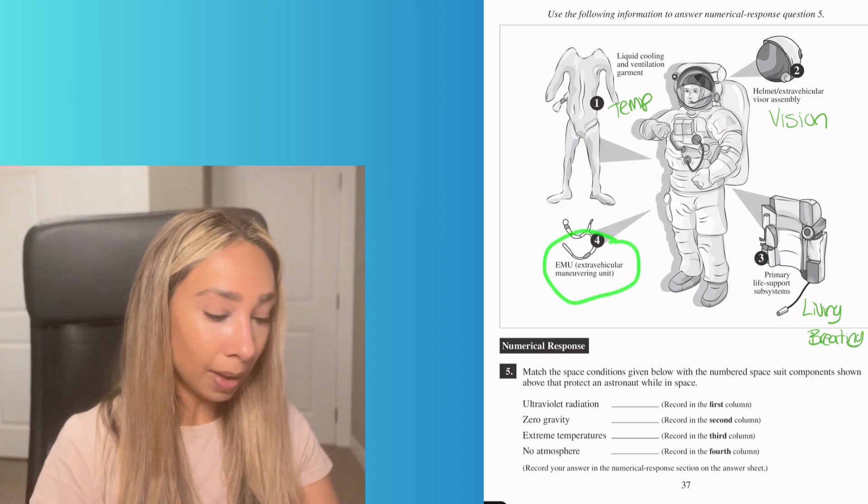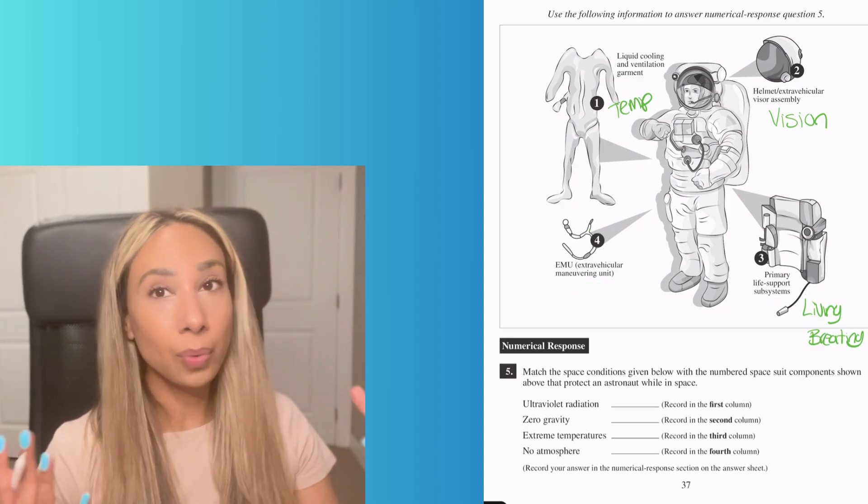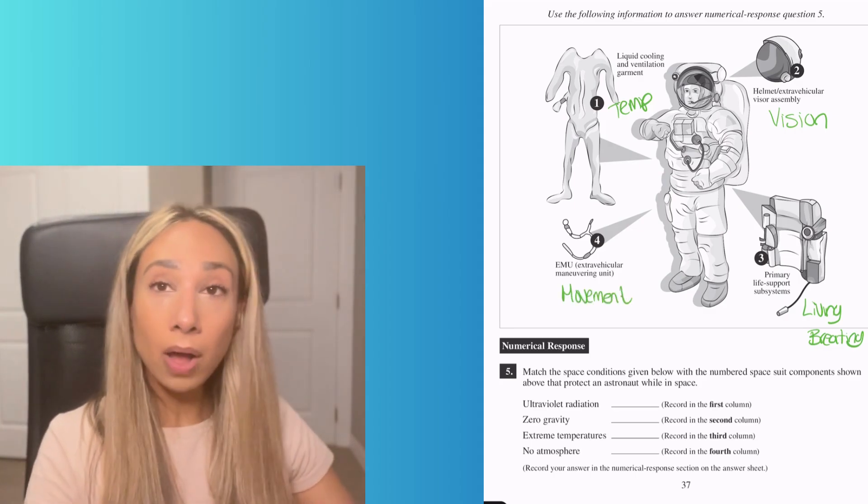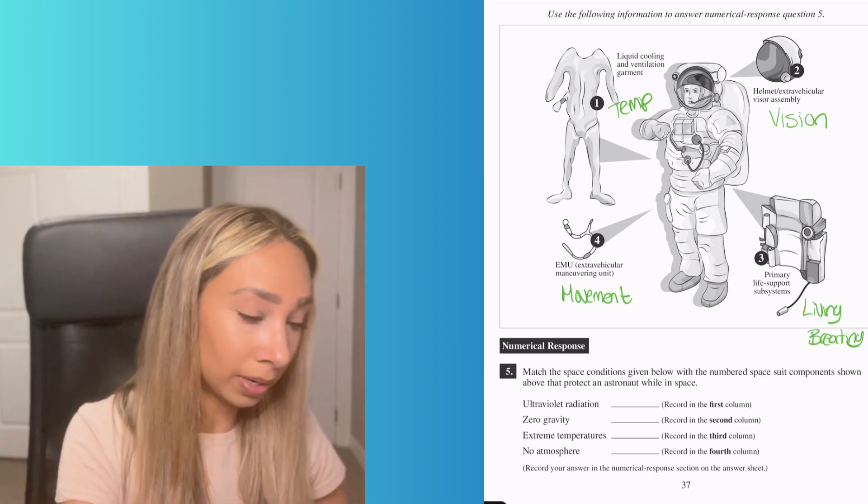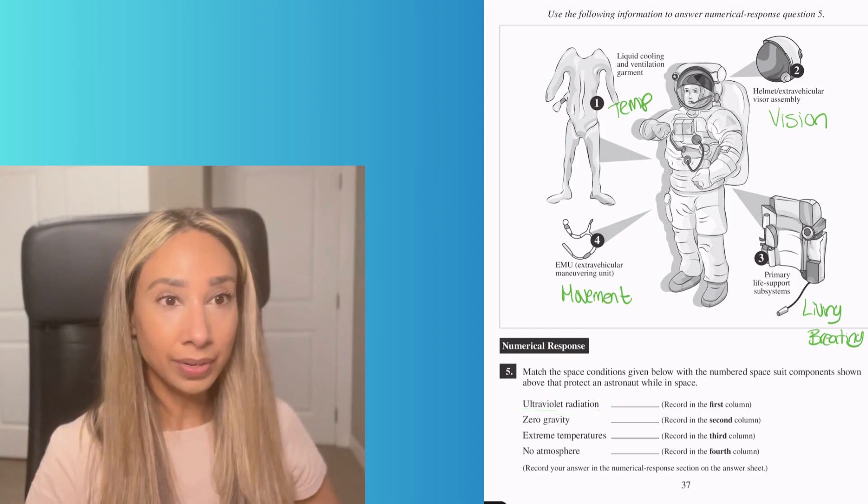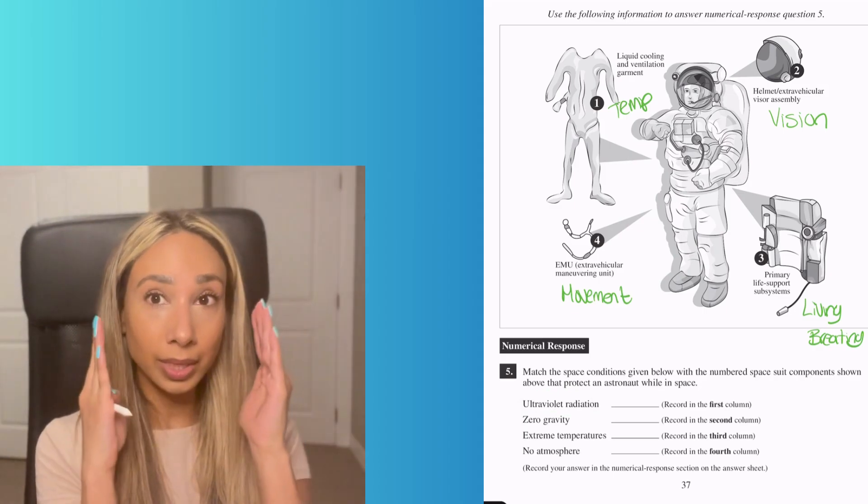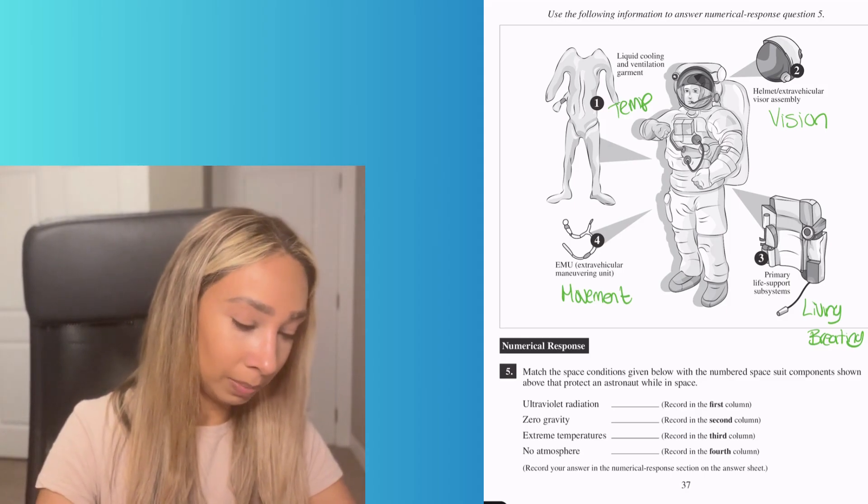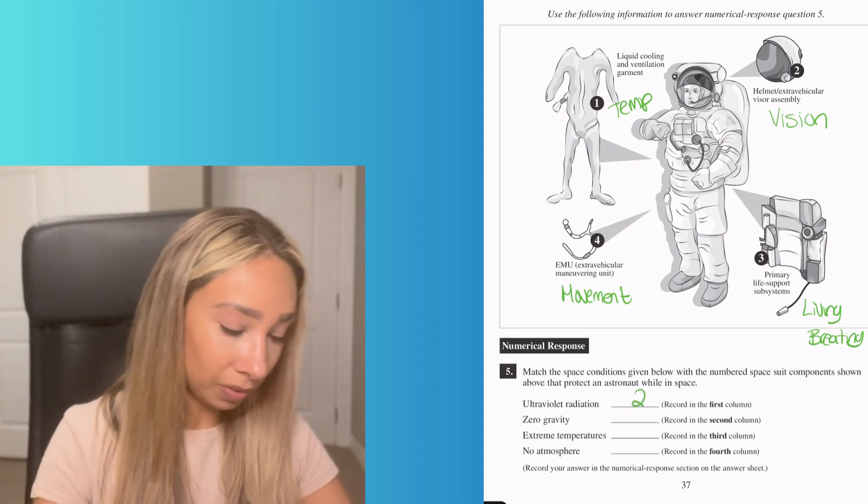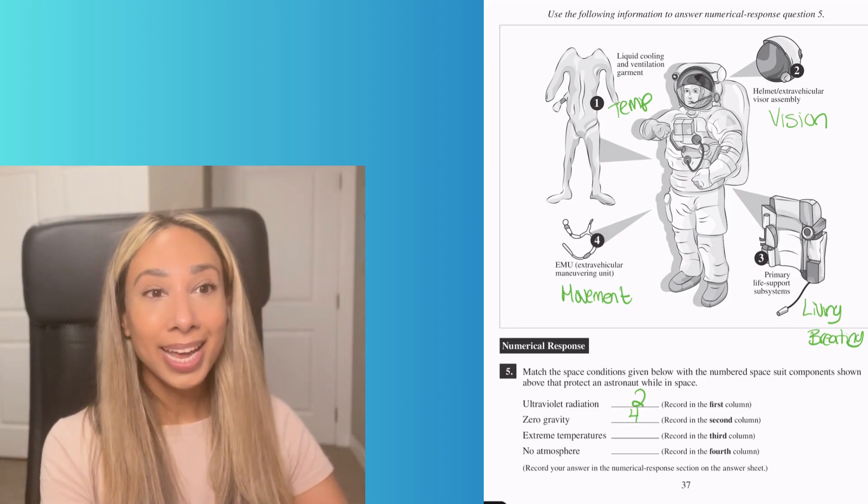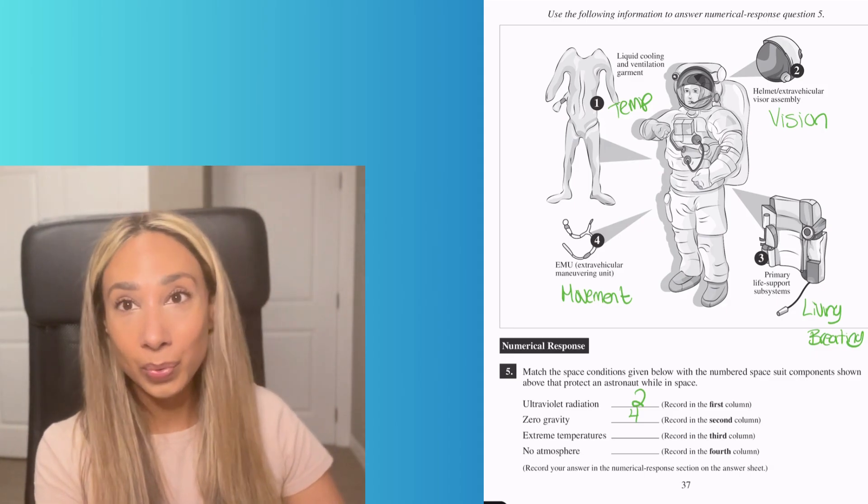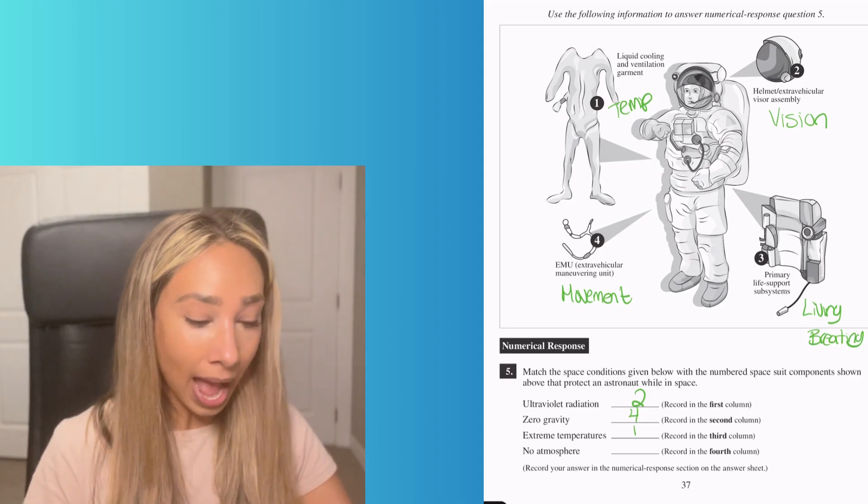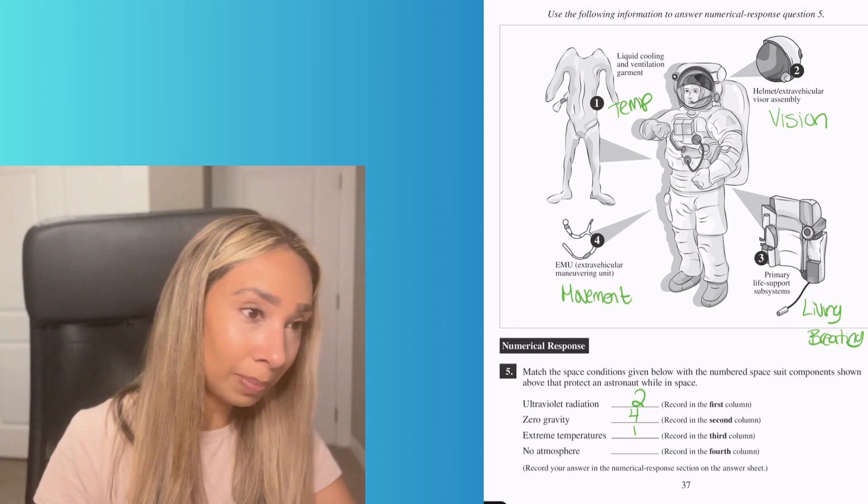Our last one is a maneuvering unit. In space you don't have gravity to help you, so you need something to help you move. This one is about mobility. Now let's put these in order. Ultraviolet radiation—that's hitting you, and you're covered except where you're looking through, so that's number two. Zero gravity—we talked about movement, that's four. Extreme temperatures—that's number one. And atmosphere means no oxygen, so that's number three.